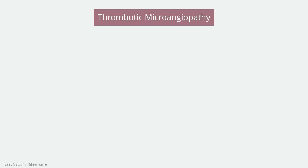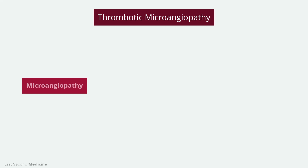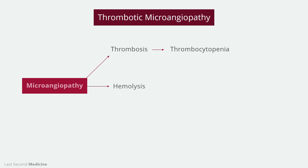Hemolytic uremic syndrome is a primary thrombotic microangiopathy. But what is thrombotic microangiopathy? As the name indicates, due to some reason, there is a pathology in the micro vessels such as capillaries and arterioles. This leads to the activation of thrombosis. Platelets decrease due to consumption, leading to thrombocytopenia. Red blood cells, while passing through abnormal vessels, are destroyed. This is called microangiopathic hemolytic anemia.